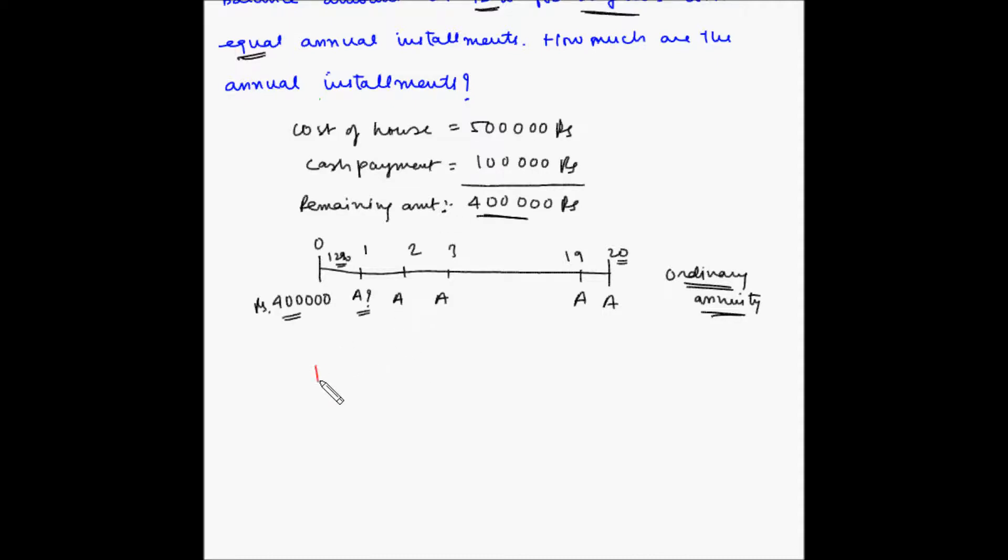For the purposes of solving this example here, I am going to use the formula for present value of an ordinary annuity, which is A × [1/i - 1/(i(1+i)^n)]. So we have PV = 4 lakh rupees, i = 12%, n = 20, and A is to be found out.